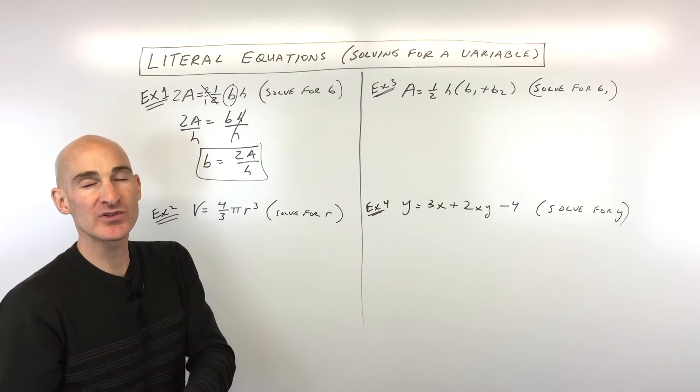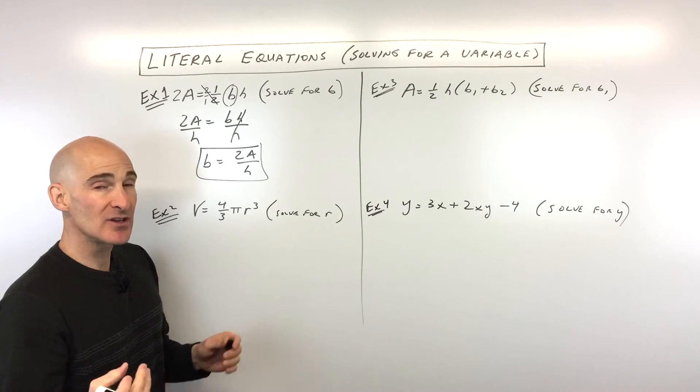And so our final answer is B equals 2A over H, and you can see we solve for B, meaning we've got B by itself. B equals something, right? Okay, let's go to example number two. See if you can do this one.